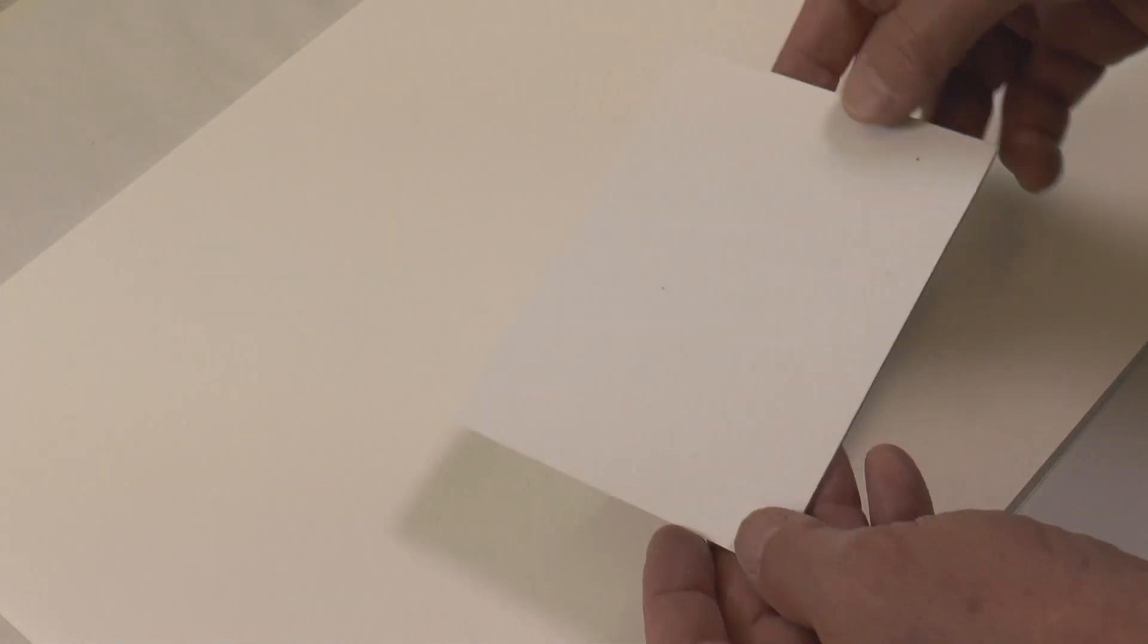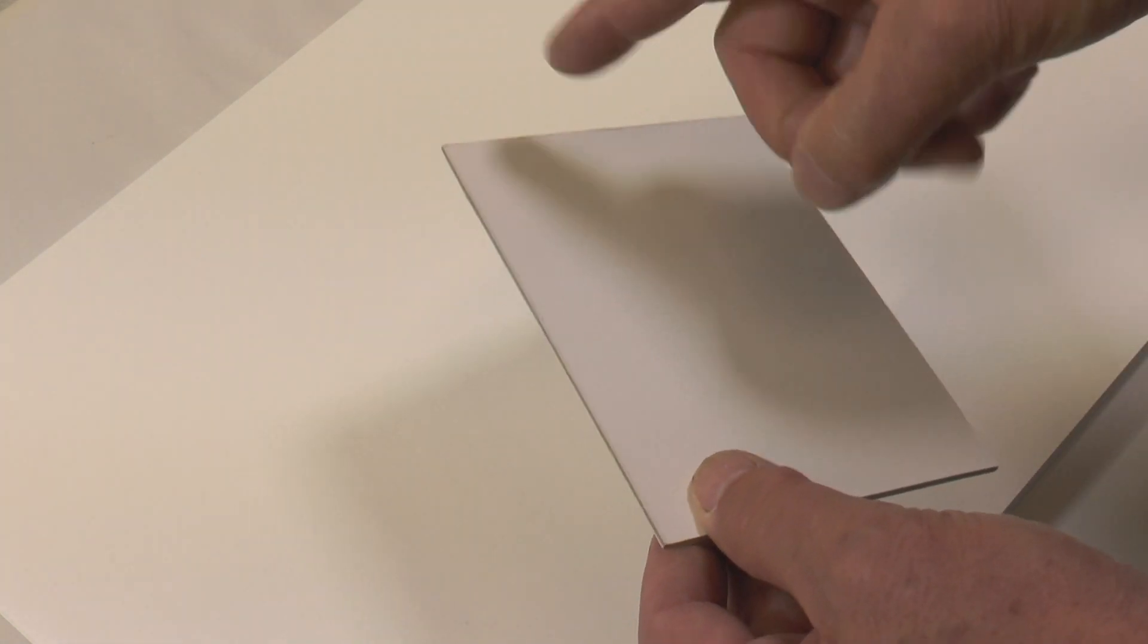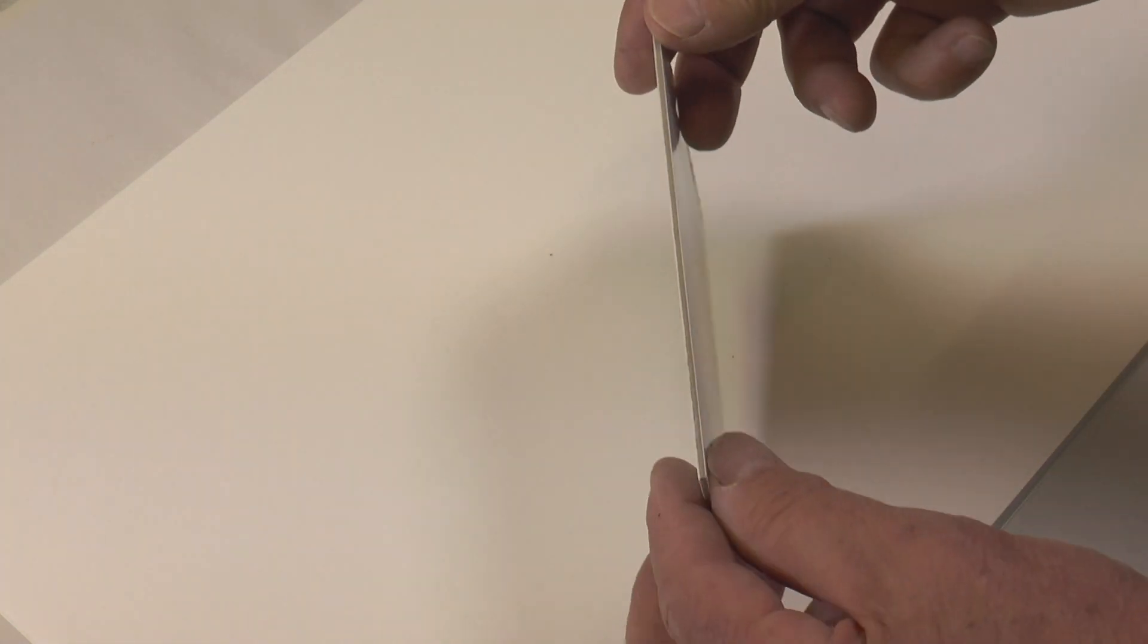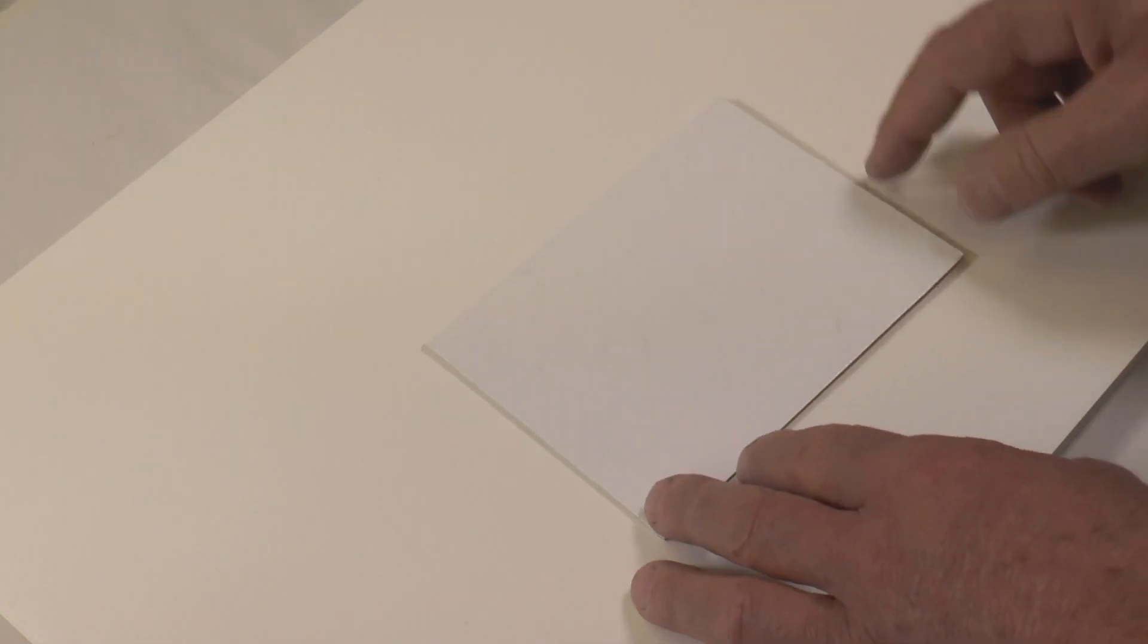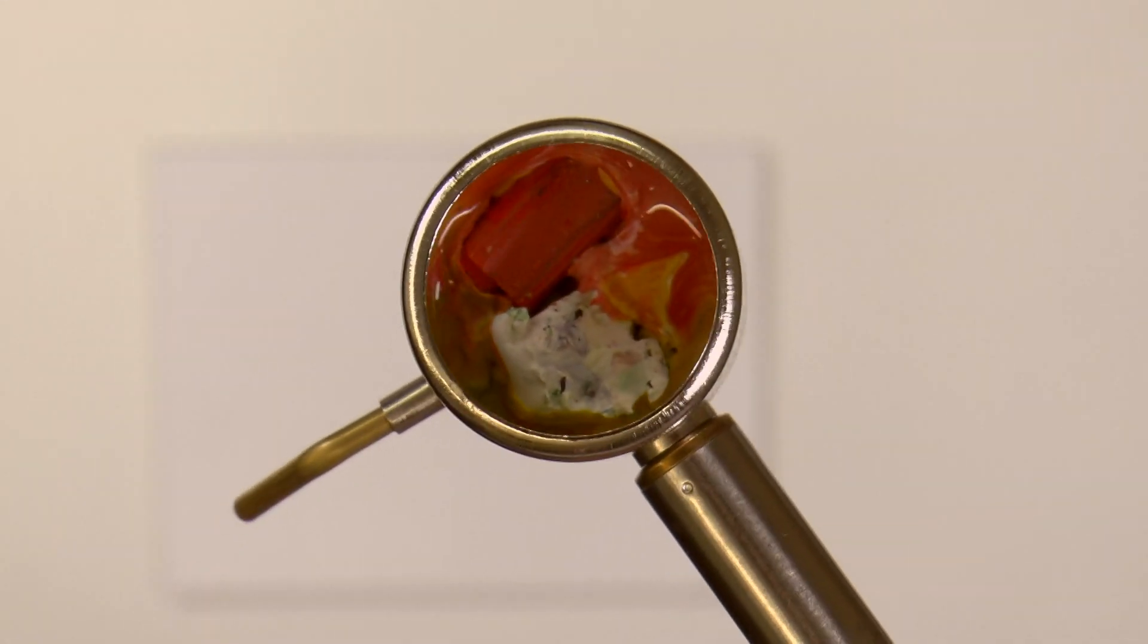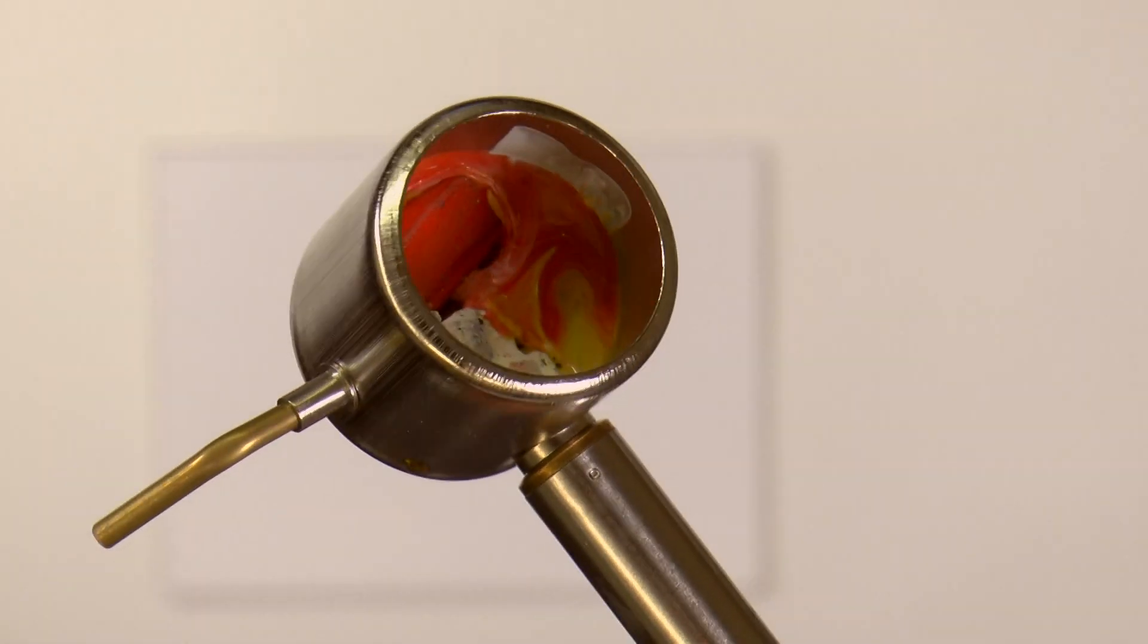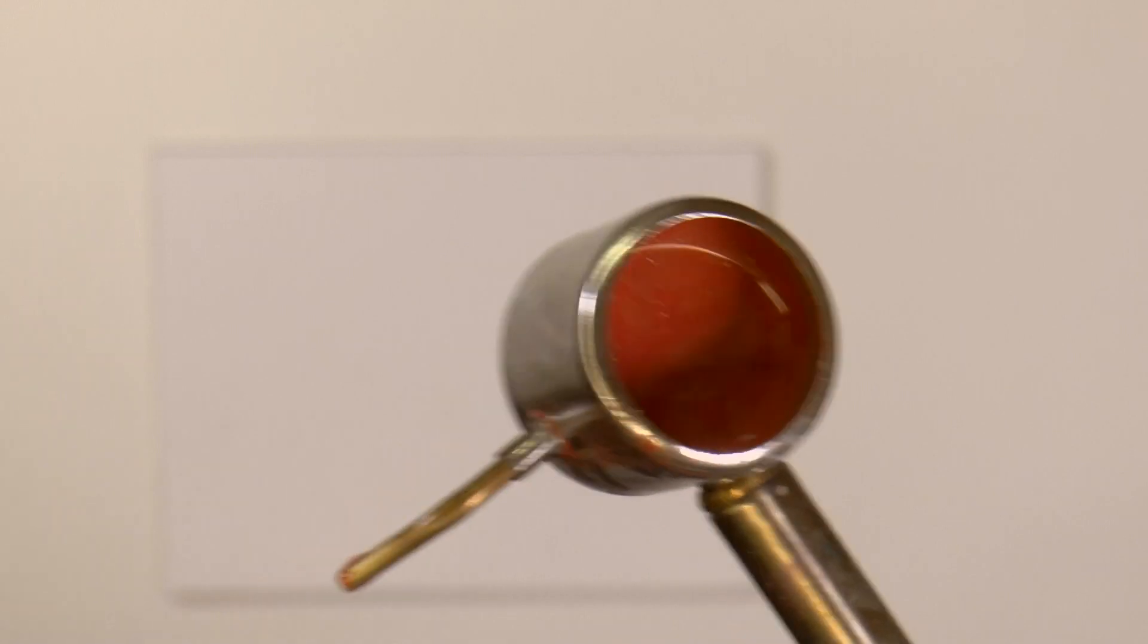This is a rigid board. It's rigid and that's important because as we build up a thicker layer of wax, any flexing could crack that wax. So ideally work onto a rigid surface, especially if you're going to build up any depth.